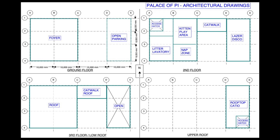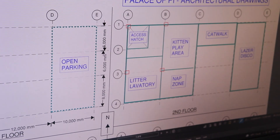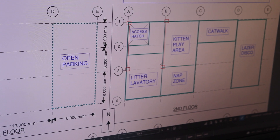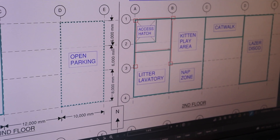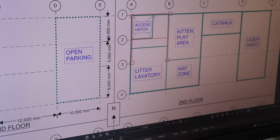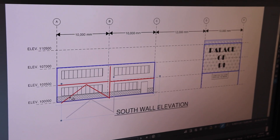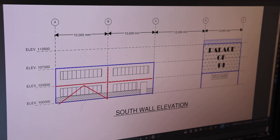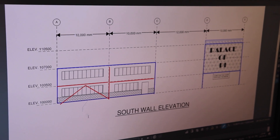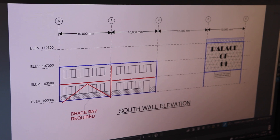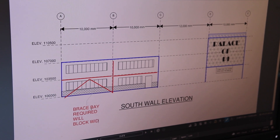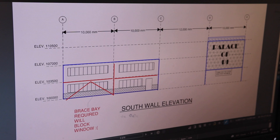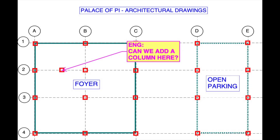Step one is understanding the building. The key to this is interpreting architectural drawings. I look for a framing concept to support the building as the architect envisions it. Sometimes they're complex and I can't give the architect what they want — and sometimes the architects don't give me what I want.